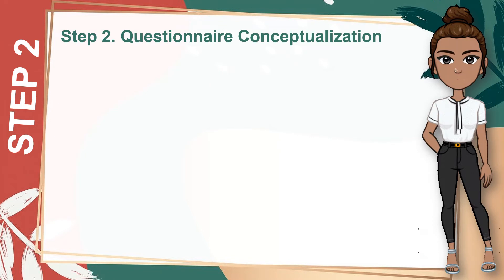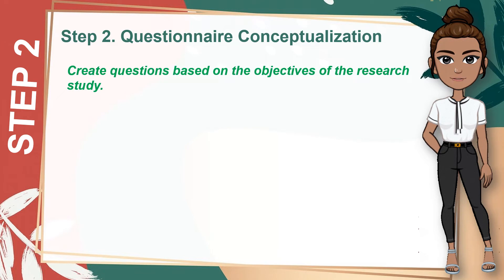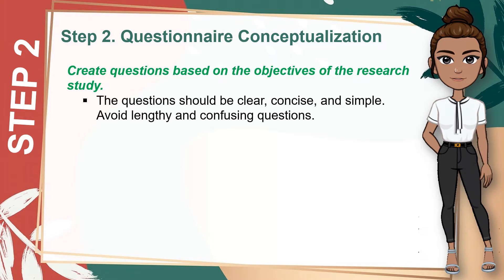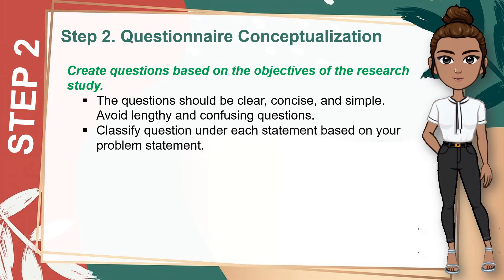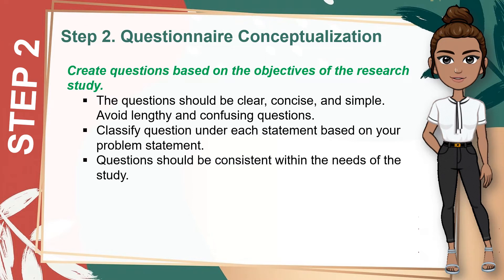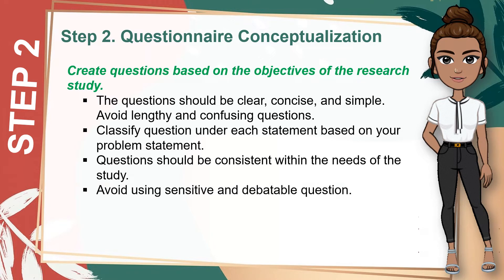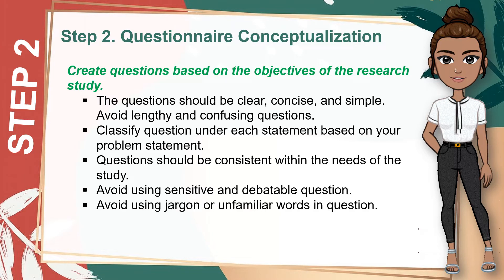The next sub-step in Step 2 is to create questions based on the objectives of the research study. Here are the guidelines: first, the questions should be clear, concise, and simple — avoid lengthy and confusing questions. Second, classify questions under each statement based on your problem statement. Third, questions should be consistent within the needs of the study. Also, avoid using sensitive and debatable questions. Lastly, avoid using jargon or unfamiliar words in questions.